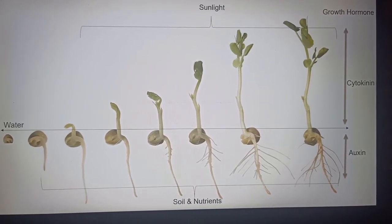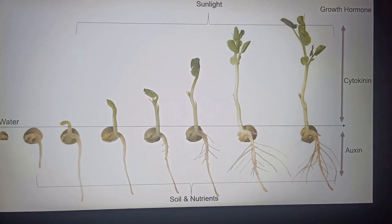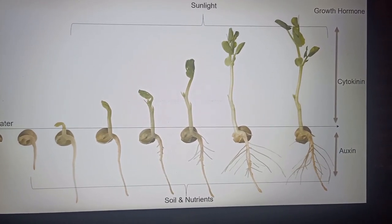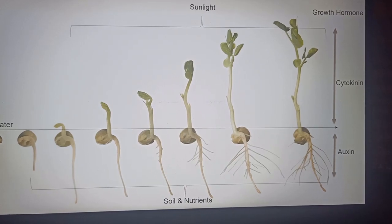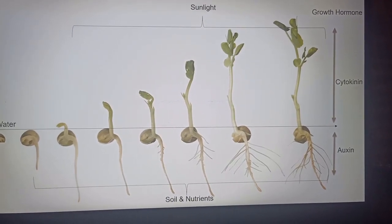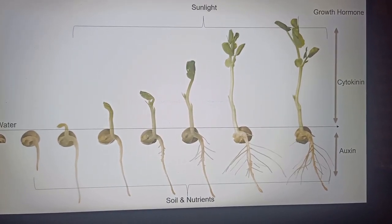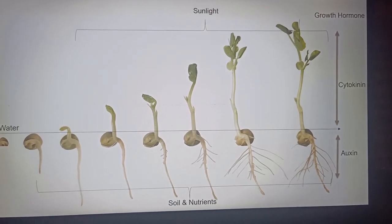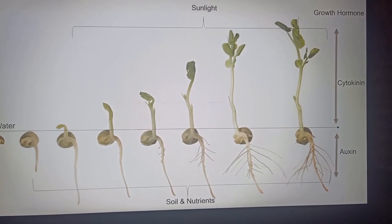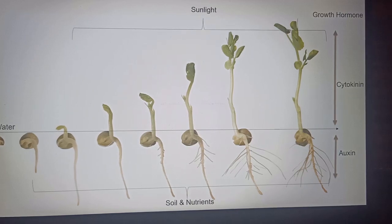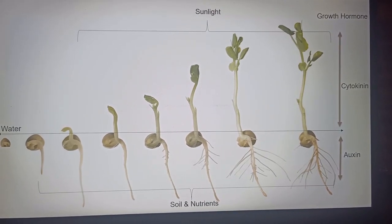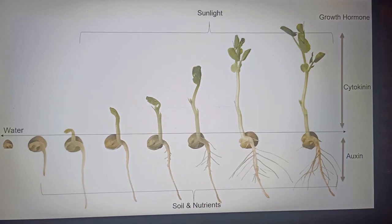Once the shoot comes out from the soil, it develops leaves that perform photosynthesis. The products of photosynthesis are translocated to the root region, which also converts them into nutrition, and the whole plant develops naturally. Growth hormones like auxins help develop the root region and the shoot region.